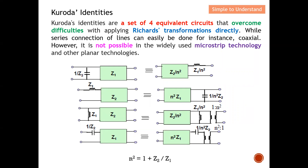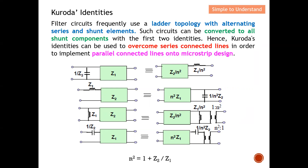The filter design frequently uses a ladder topology with alternating series and shunt elements. For a microstrip line design with lumped elements, they actually have alternating series and shunt elements — basically making up a so-called ladder topology. Such a circuit can be converted to all shunt components using the first two identities. We can use the first two identities to convert all series to all shunt. Hence Kuroda's identity can be used to overcome series connected lines in order to implement parallel connected lines onto microstrip design. For our discussion we will be mainly focused on these first two.